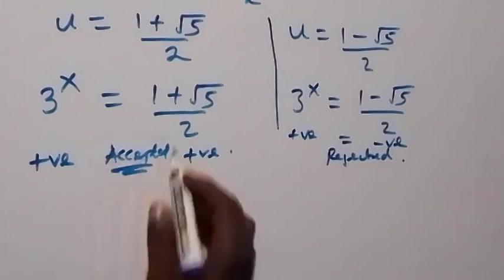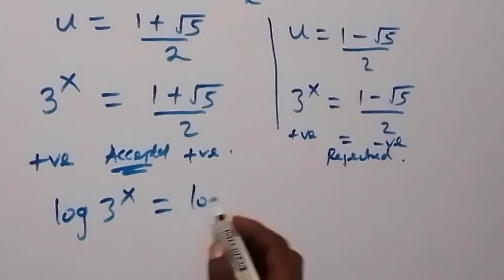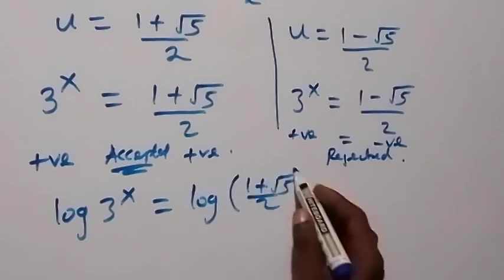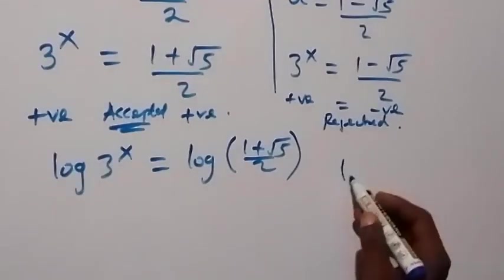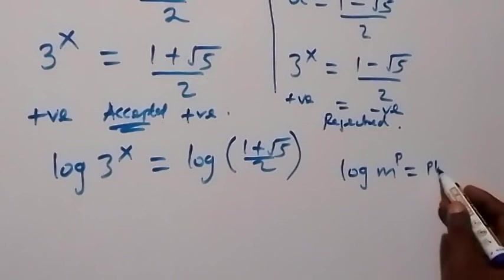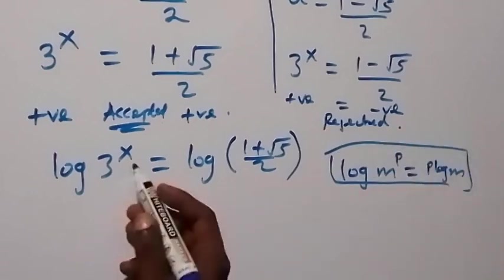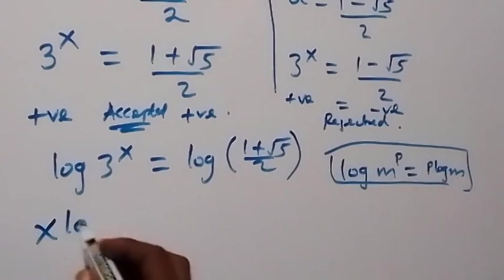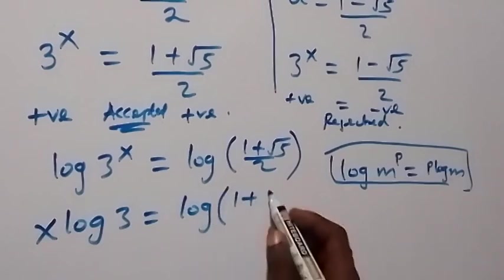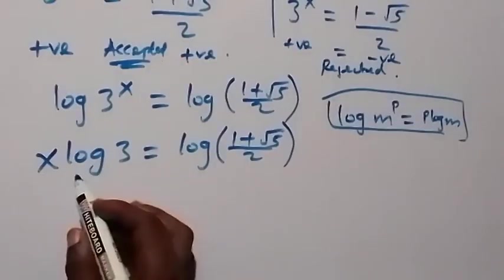Taking the log on both sides: log of 3 raised to power x equals log of 1 plus root 5 over 2. Applying the power rule of logarithms — log of m raised to power p equals p times log m — this becomes x times log 3 equals log of 1 plus root 5 over 2.